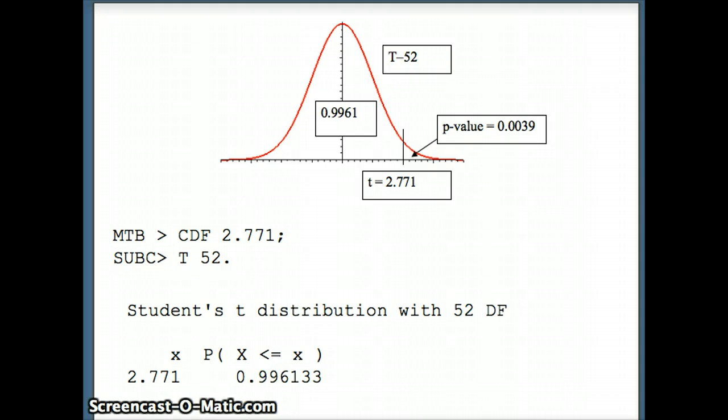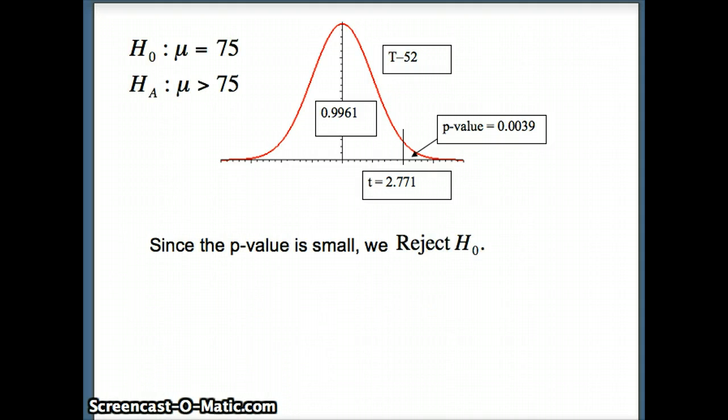Remember, if the p-value is small, we reject the null hypothesis. If the p-value is large, we fail to reject the null hypothesis. Here was our null hypothesis and alternative hypothesis.